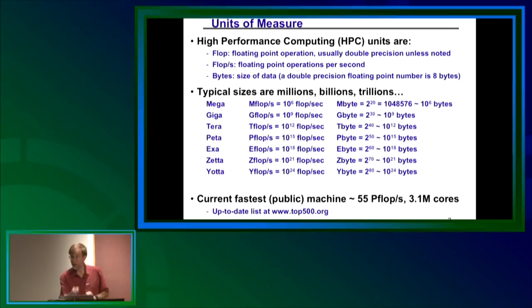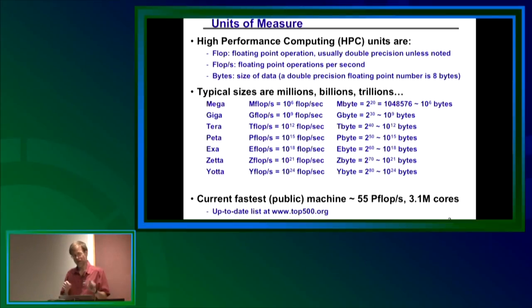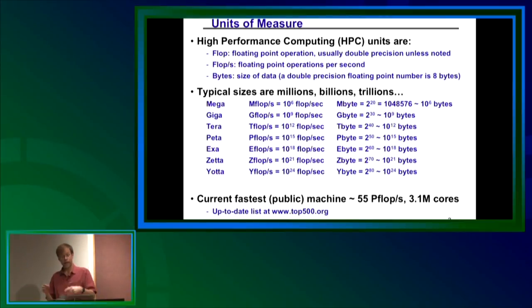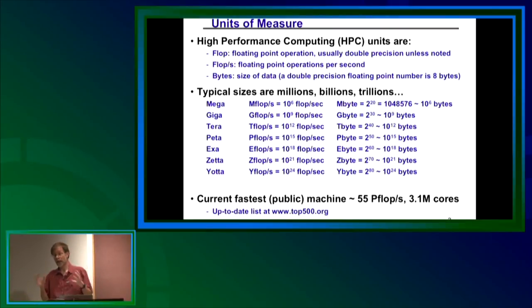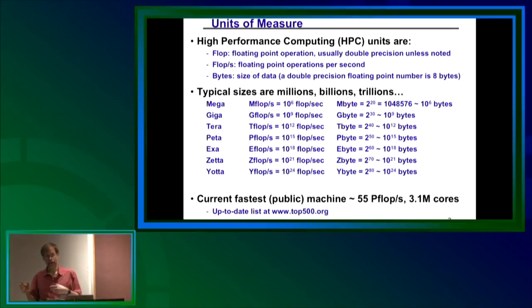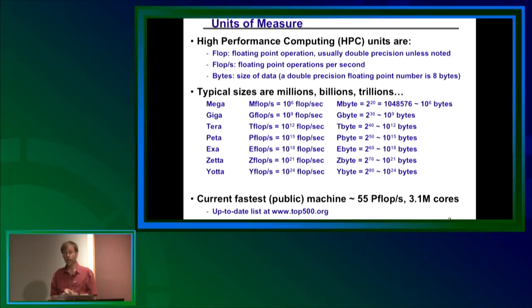An interesting new issue coming in the exaflop world: if you have a billion parallel processes going on at the same time — which is what people predict — chances are one of them is going to break. Your program will have to figure out how to keep running even though things are breaking all the time. That's not something we're accustomed to thinking about, but that's going to be the world in about three or four years.